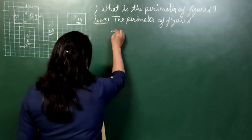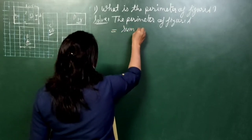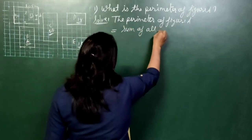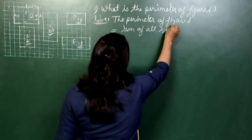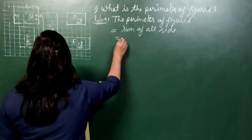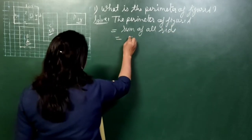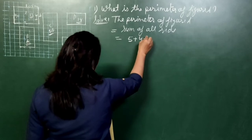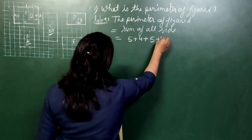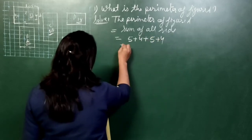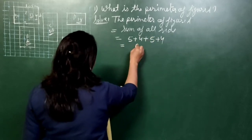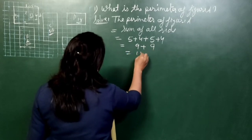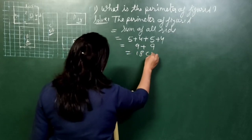The perimeter is the sum of all sides. So: 5 + 4 = 9, and 5 + 4 = 9. Then 9 + 9 = 18 cm. The perimeter of figure A is 18 cm.